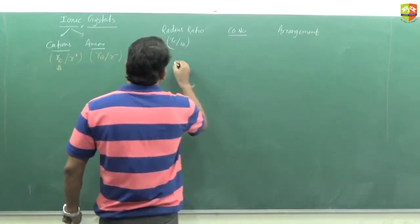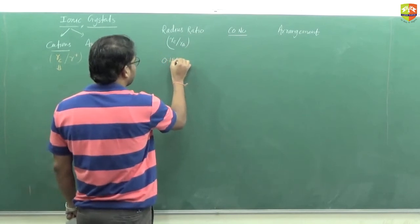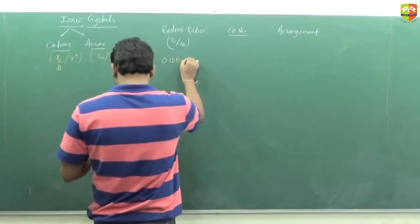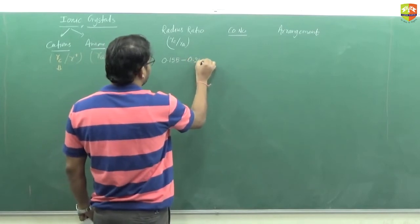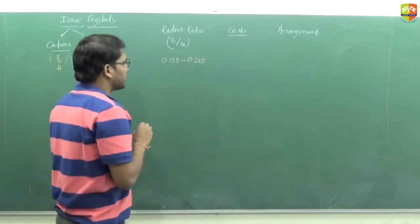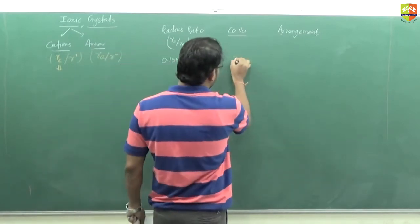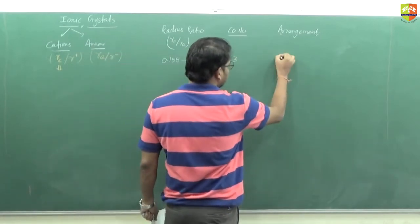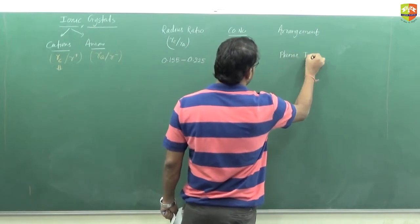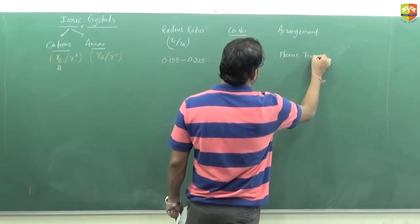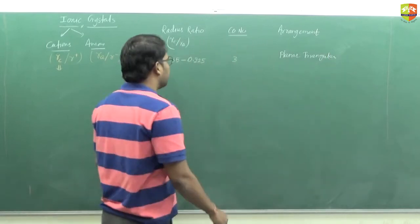If the radius ratio RC/RA is 0.155 to 0.225, then the coordination number will be 3 and the arrangement will be planar triangular.